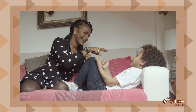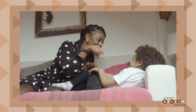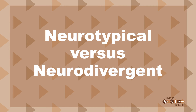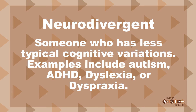Don't worry — we will talk about ways in which you can promote and initiate the development of all five SEL core competencies, no matter if your child is neurotypical or neurodivergent. Neurotypical is a descriptor that refers to someone who has the brain functions, behaviors, and processing considered standard or typical. Neurodivergent, however, refers to an individual who has less typical cognitive variations such as autism, ADHD, dyslexia, or dyspraxia. The list can go on.